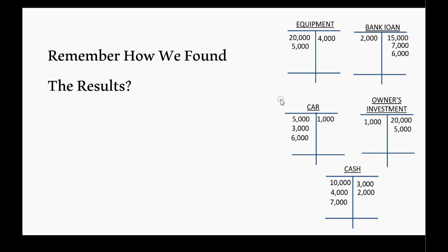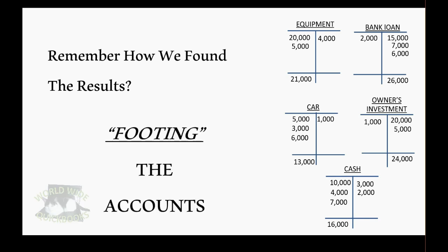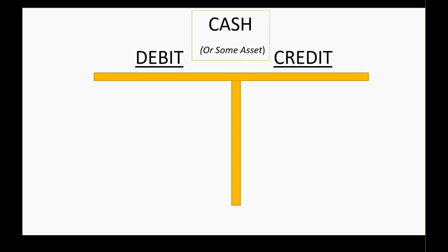From the prior video, we found the results of each account by getting the total debits and total credits, putting them together, and placing the result on only one side. That process is called footing the accounts, which means: find the total debits, find the total credits, combine them, and find the ending balance.